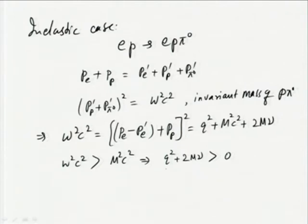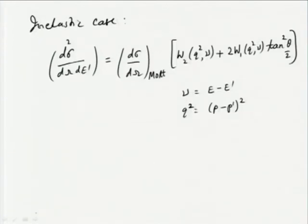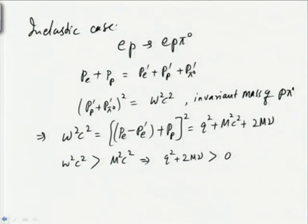In the elastic case, W was replaced by m_p (the proton mass), so we had q² + 2mν = 0 exactly. In the inelastic case it is not so: Q² and ν can vary independently of each other. This is why, in the expression for the differential cross section in inelastic scattering, the structure functions are functions of two variables Q² and ν, unlike in elastic scattering where they are only a function of Q².